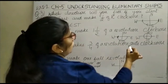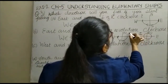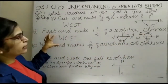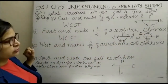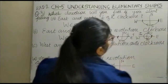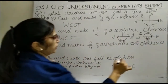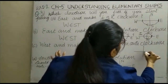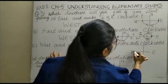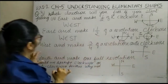So this is your one revolution, and this is your half, so this is one and a half revolutions total. After one and a half revolutions, you are at west. You can note the direction — this is your starting point and this is your clockwise direction. Now: west, east, north, and this is your south.